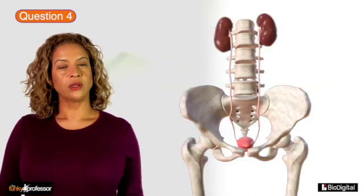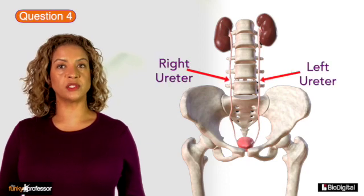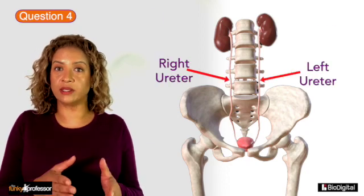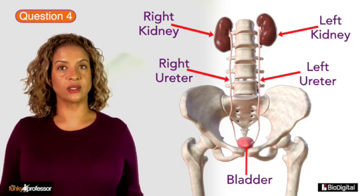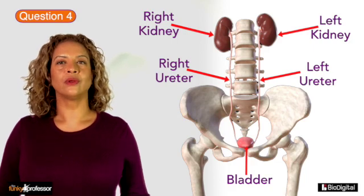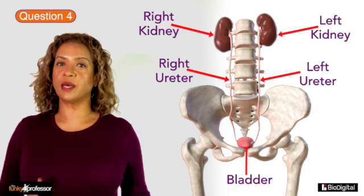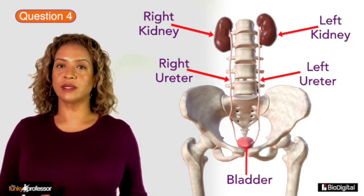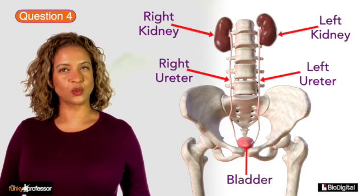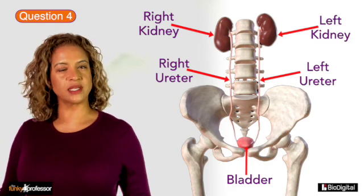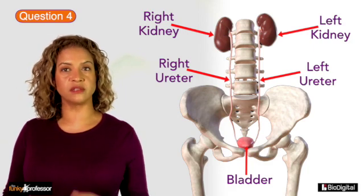Question 4. The ureters are two long tubes that transmit urine made in the kidneys down towards the bladder where it is stored within the pelvis. The ureters can be considered to have an abdominal part and a pelvic part. The blood supply to the ureters is quite complex and subject to a great degree of variability amongst individuals.